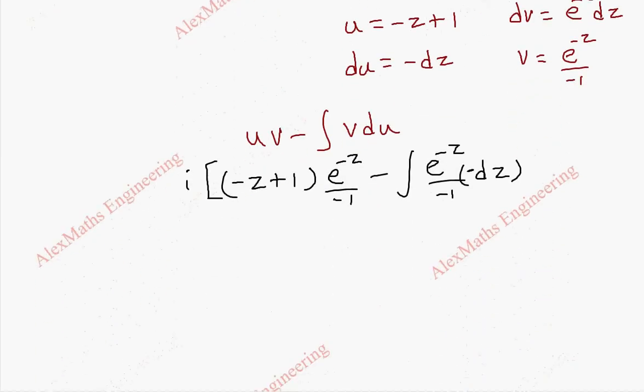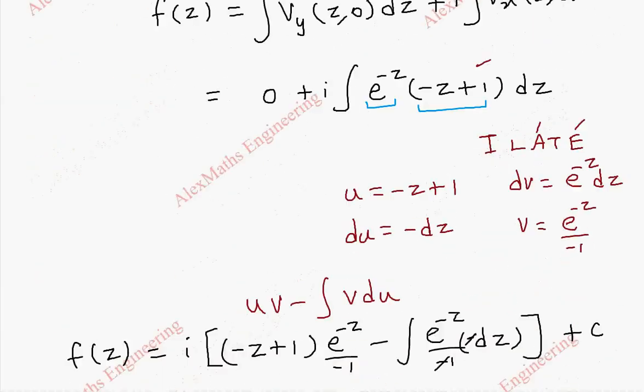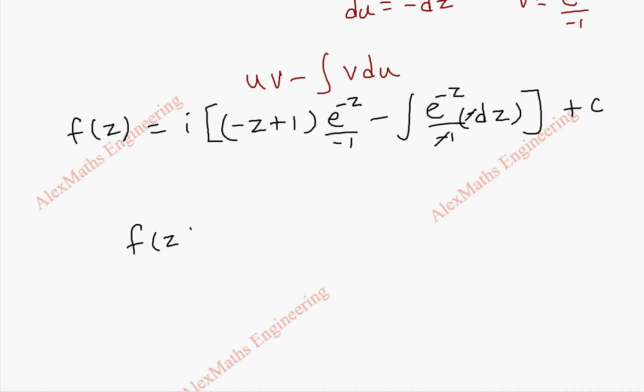Now finally, we can cancel these two. And we have a plus z also at the end. And this is our f of z. So f of z becomes i into, even this minus, if I multiply inside, this becomes z and this become minus 1. So e power minus z into z minus 1. And here, there is a minus sign. Integration of e power minus z is e power minus z by minus 1. I can make this as plus.